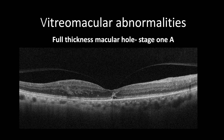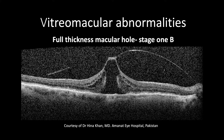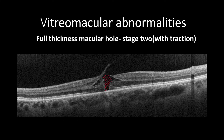Full thickness macular hole can be presented in several stages. Stage 1a is presented as elevation and disruption of the ellipsoid zone combined with vitromacular traction. Stage 1b features a split of the outer and inner retinal layers leaving only the ILM attached with oblique anteroposterior vitromacular traction. Stage 2 shows a full thickness retinal defect with an attached operculum and may be accompanied by vitromacular traction, and sometimes there is no vitromacular traction.